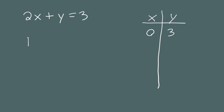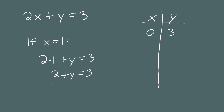Next, what if x equals 1? What does y have to be in this case? We plug 1 in for x and find out what y has to be. That gives us 2 times 1 plus y equals 3, or 2 plus y equals 3. We subtract 2 from both sides, giving us y equals 1. So when x equals 1, y is also equal to 1.